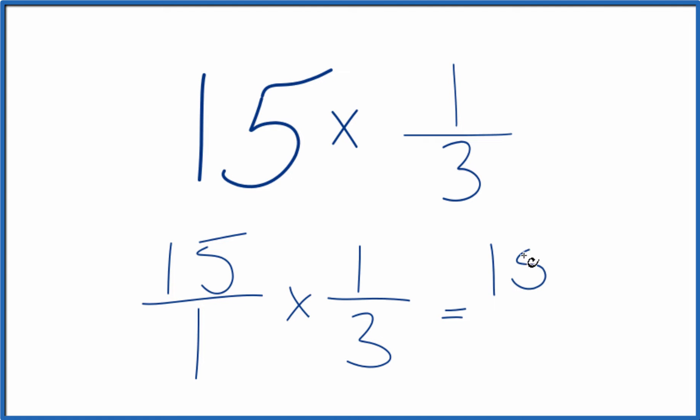15 times 1, that's 15. 1 times 3, that's 3. So when we multiply 15 times one-third, we get 15 thirds.